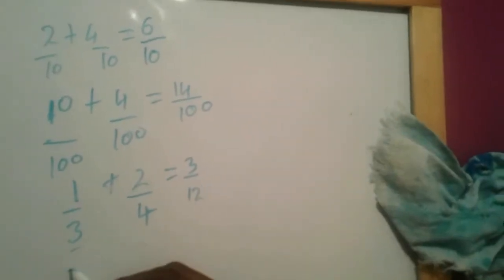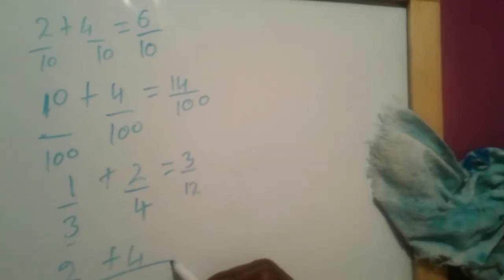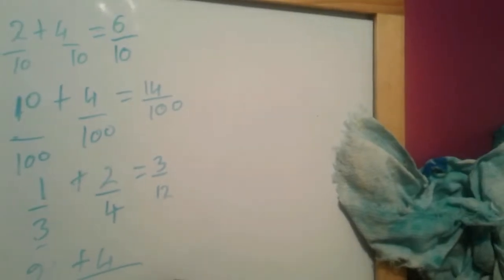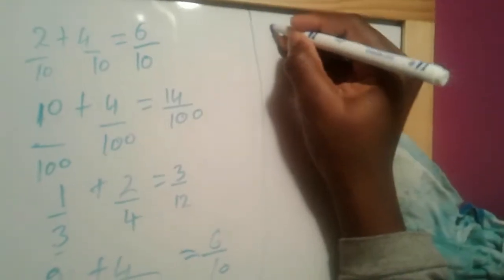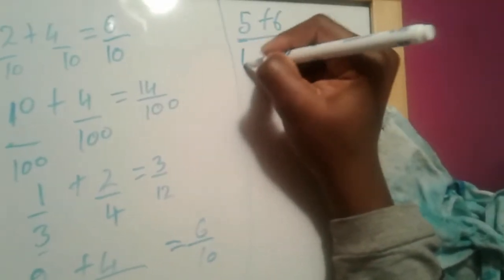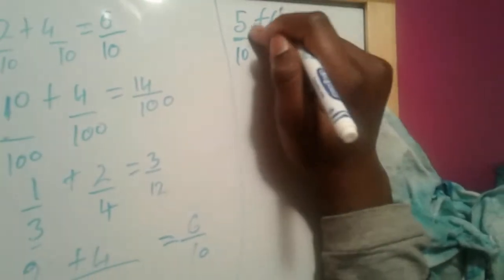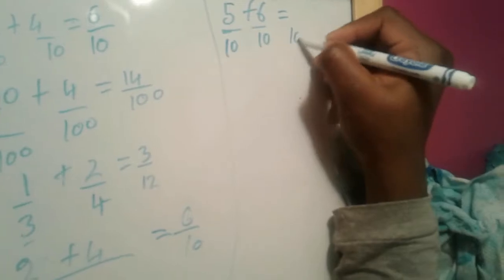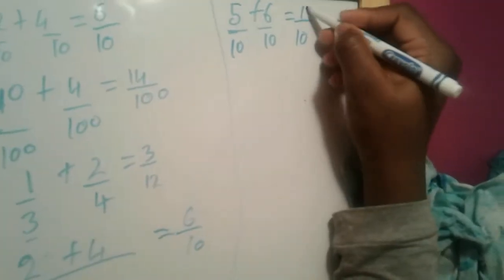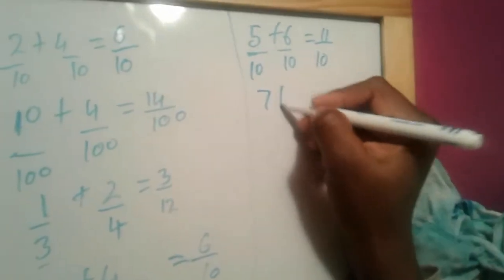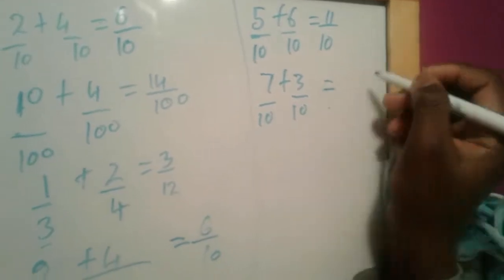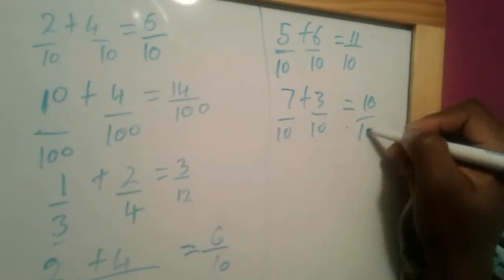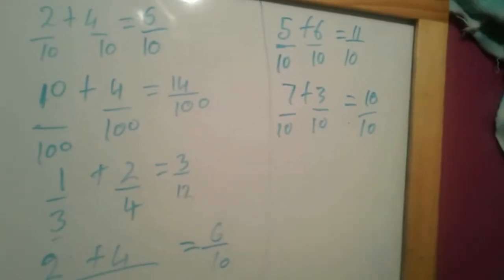If it's two plus four and they have the same denominators, you just add the numerators — the answer would have the same denominator, so it will be six out of ten. And if it's five plus six out of ten, it will be eleven out of ten. If it's seven plus three out of ten, that will be ten out of ten.